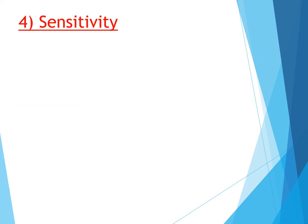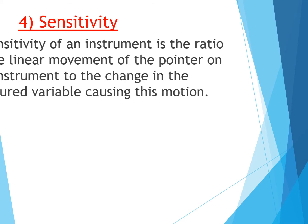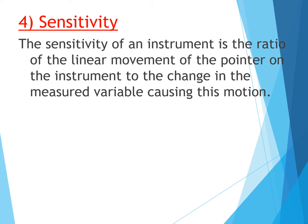The next definition is sensitivity. The sensitivity of an instrument is the ratio of the linear measurement of the pointer on the instrument to the change in the measured variable causing that motion. If a change in the measured variable is not being indicated on the pointer in the linear scale, then it is not sensitive. For the smallest reading, if it is indicated on the linear measurement scale, then it is sensitive.